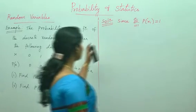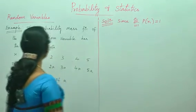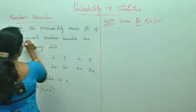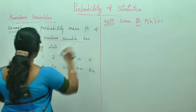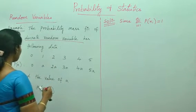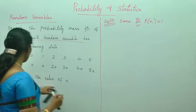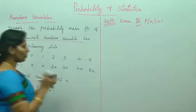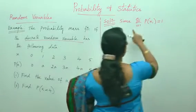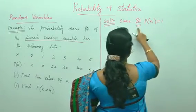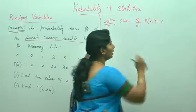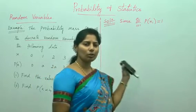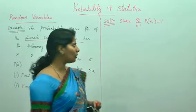Now let us see the solution for the discrete random variable. They have given you the data and also they have asked you to find the value of a and find P(X < 4). Since summation from i equals 1 to infinity — using those two conditions we are going to solve this discrete random variable.